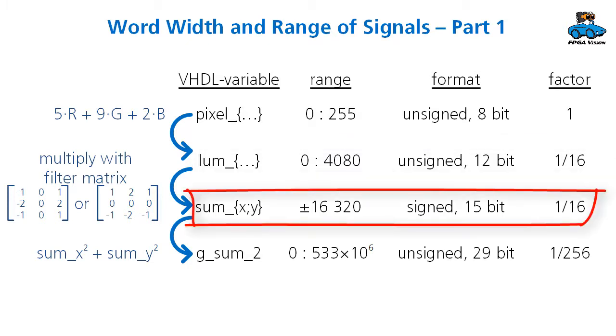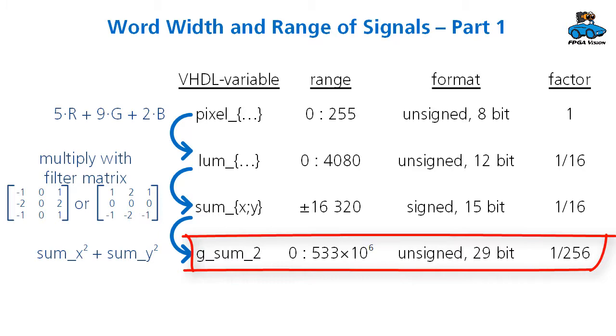Now we do the filter matrix with the different luminance values. And we have positive factors, plus 1, plus 2, plus 1, minus 1, minus 2, minus 1, so that the sum can have a value of plus minus 16,320. As we have negative values, we have a signed value here, 15-bit. Now we take the square of these values, we sum two of these values, which gives a positive range again, and the values can be up to 533x10^6, which would be a 29-bit representation.